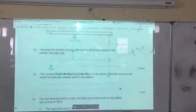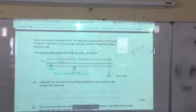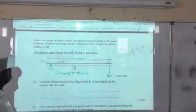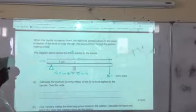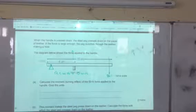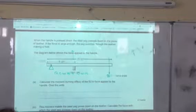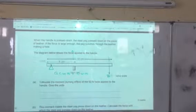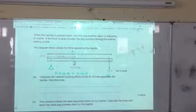Now let's look at the question. When the handle is pressed down, the steel peg presses down on the piece of leather. If the force is large enough, the peg punches through the leather making a hole.